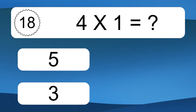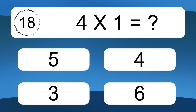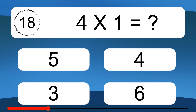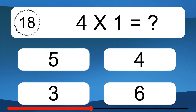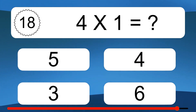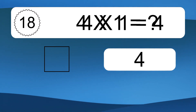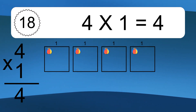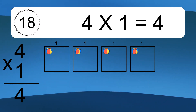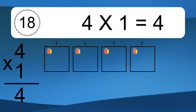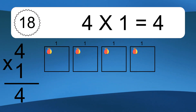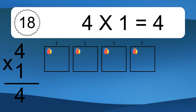4 times 1 equals what? 4 times 1 equals 4. We have 4 boxes, and each box has 1 colorful ball inside. If you count all the balls in all the boxes together, you will have 4 times 1 balls. This equals 4 balls.